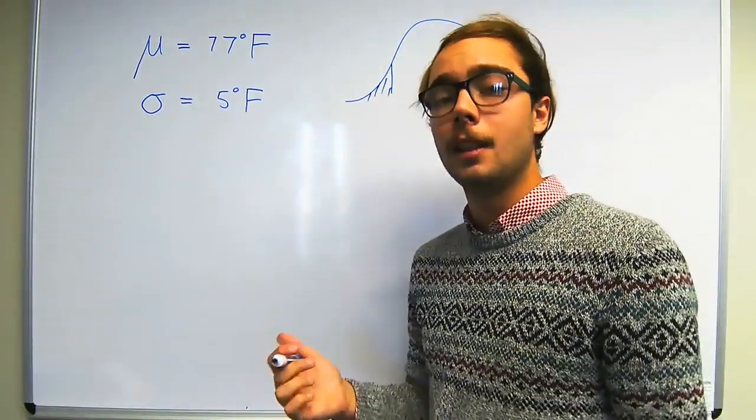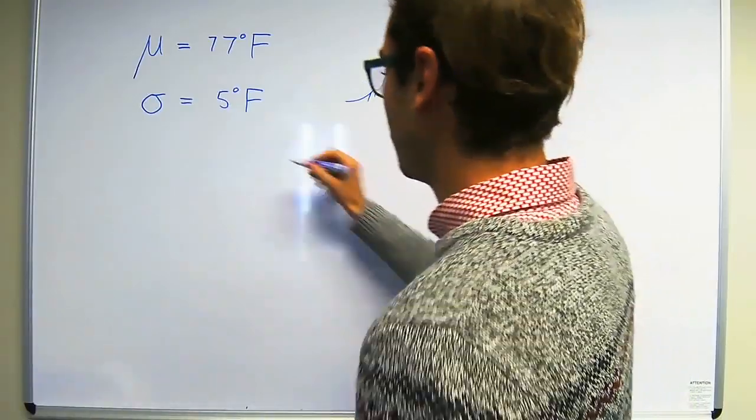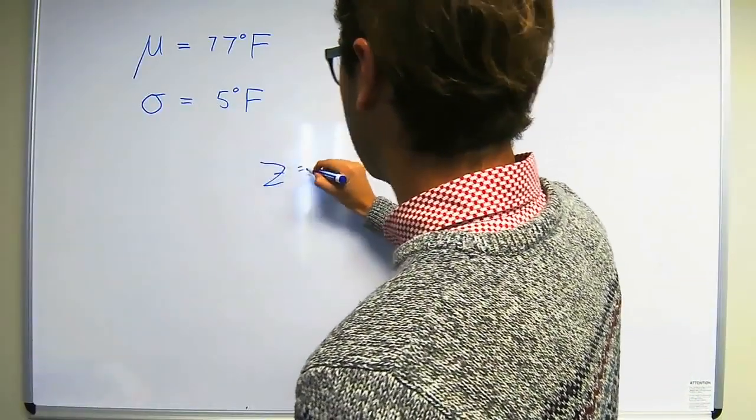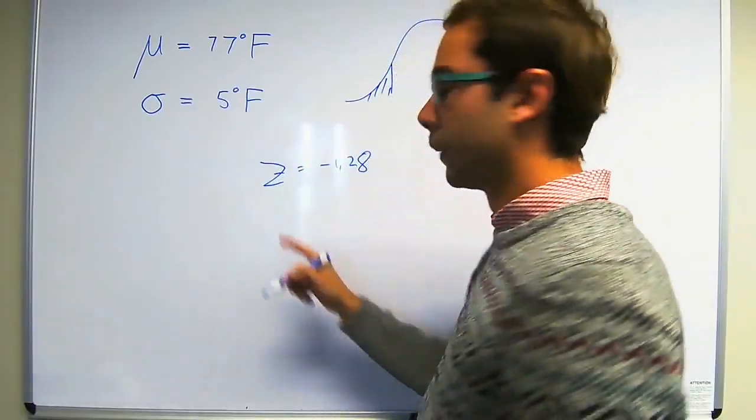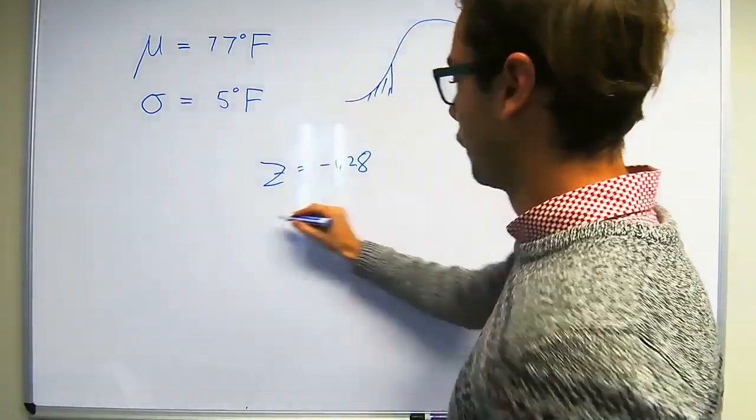So if we find the probability 0.1 on the z table, we find that the z value is minus 1.28. Now we know how the formula goes for the z value.